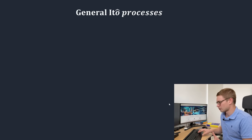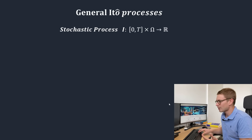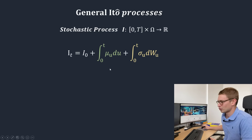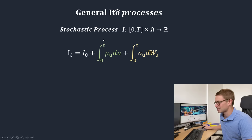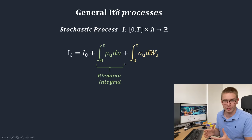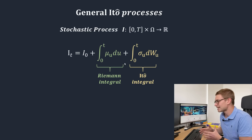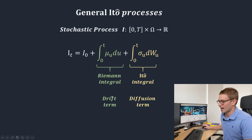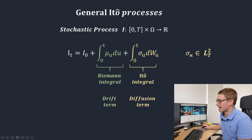Now we have an Ito integral, let's talk about general Ito processes. We have a stochastic process I on the same time domain. The general Ito integral has a starting position, a time-based integral — a normal Riemann integral — and a stochastic-based Ito integral with respect to the Wiener process. This is more often thought of as the drift term and the diffusion term. The stochastic process sigma is part of this square-integrable adapted space.